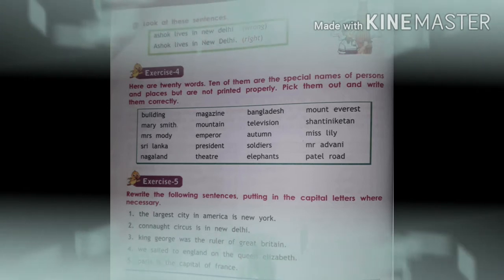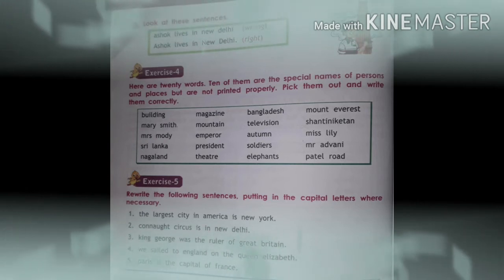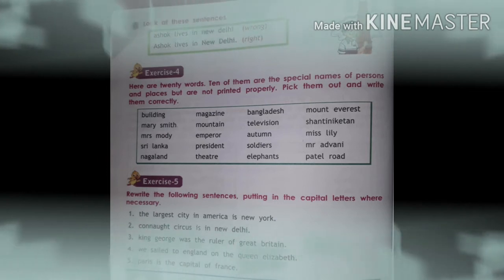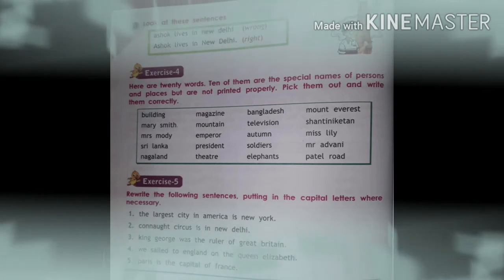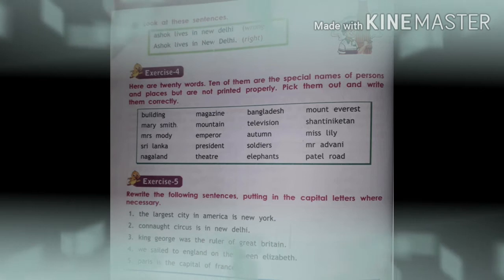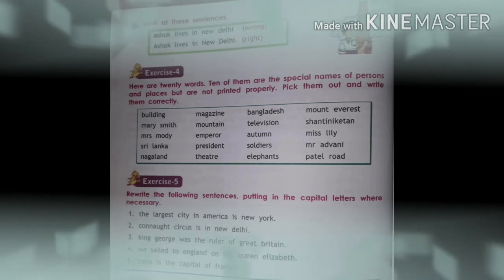You have to find out those printing mistakes. Pick them out and write them correctly. You will do it in your copy. The words are: building, Mary Smith, Mrs. Modi, Sri Lanka, Nagaland, magazine, mountain, emperor, president, theater, Bangladesh, television, autumn, soldiers, Ali friends, Mount Everest, Santini Ketan, Miss Lily, Mr. Advani, potato.